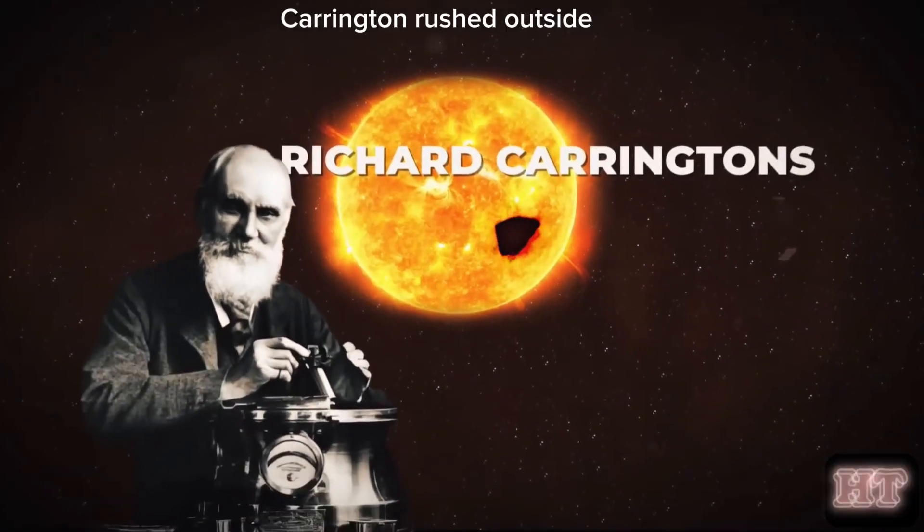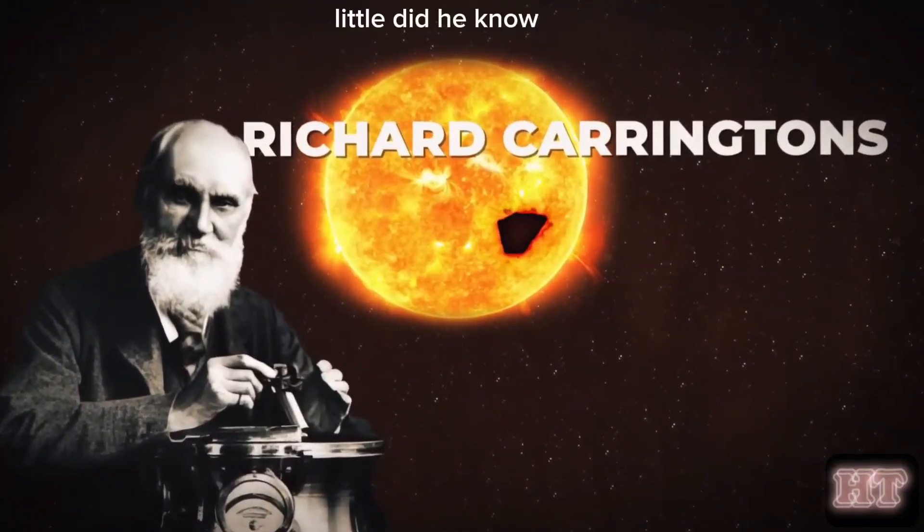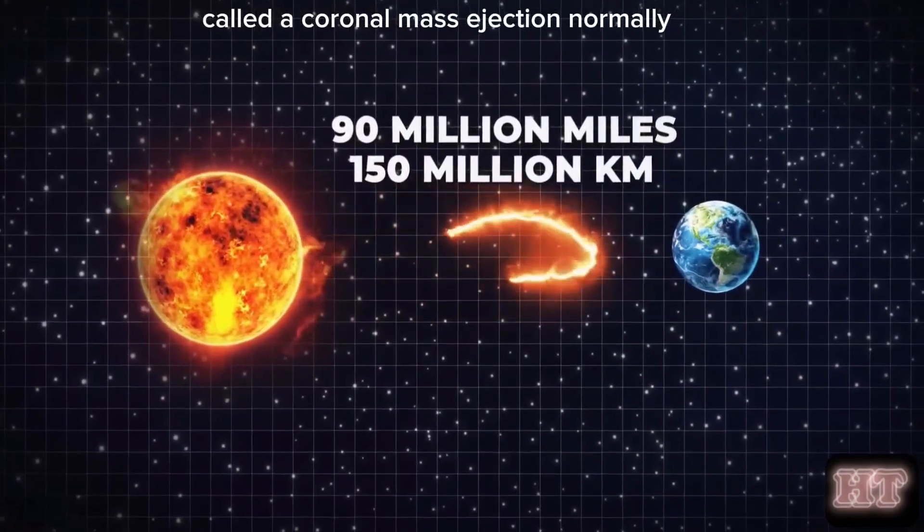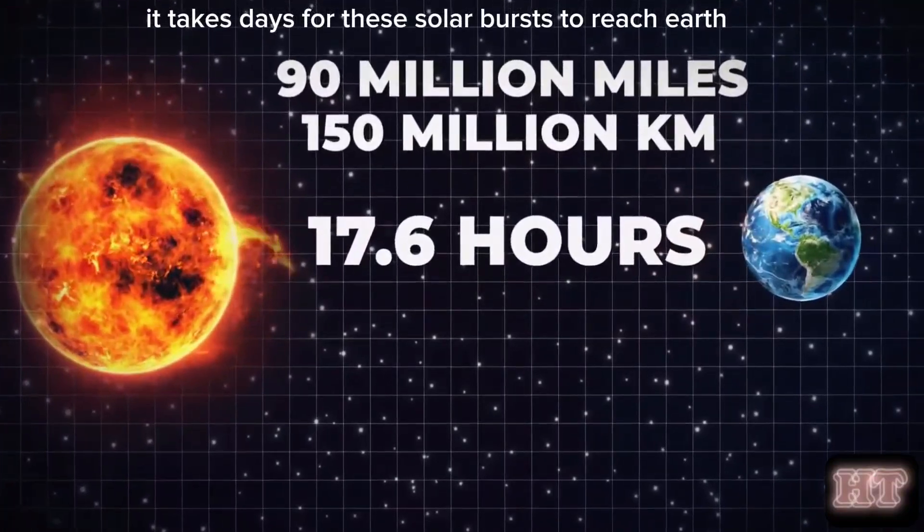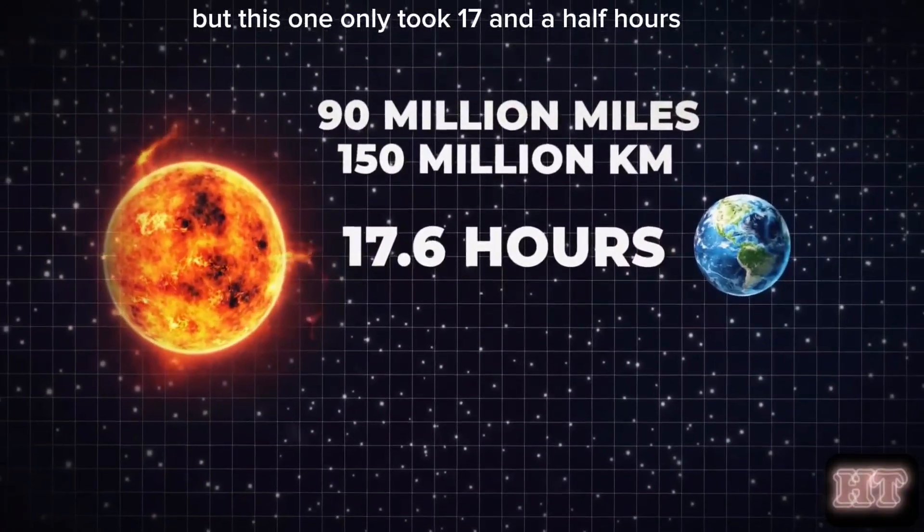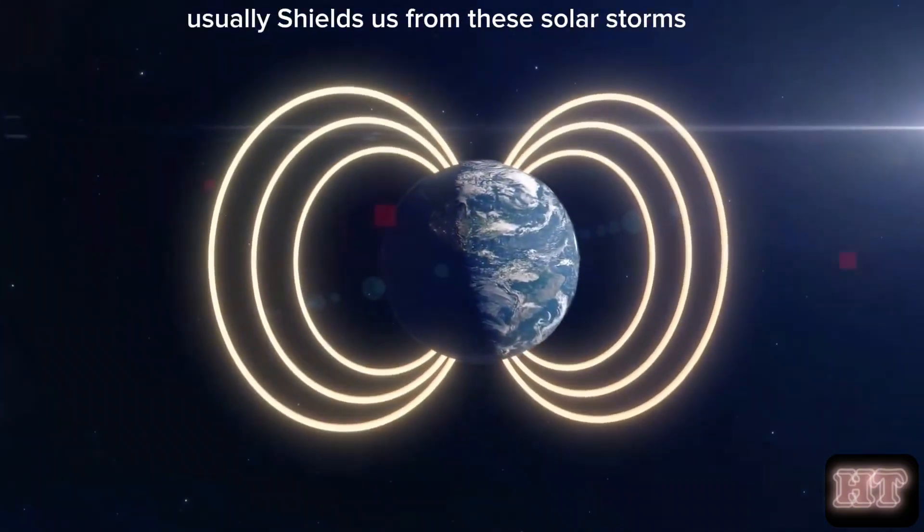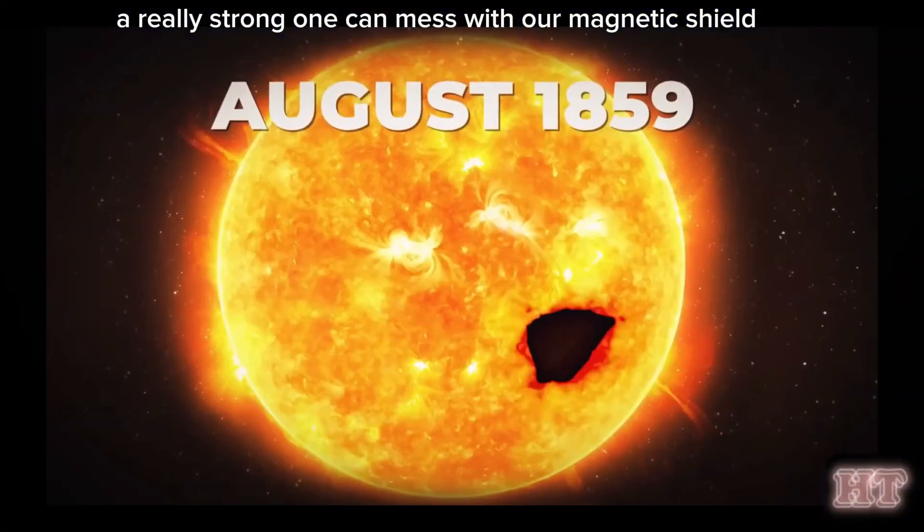Carrington rushed outside and noticed the bright spots had disappeared. Little did he know, he had just witnessed a huge eruption on the sun's surface called a coronal mass ejection. Normally, it takes days for these solar bursts to reach Earth, but this one only took 17 and a half hours. While Earth's magnetic field usually shields us from these solar storms, a really strong one can mess with our magnetic shield.